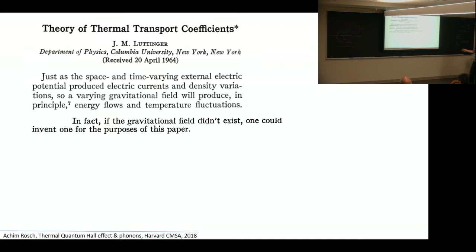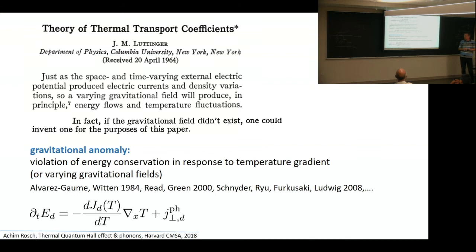So he says, just as space-time varying electric potential produces electric currents, we have now to use gravitational fields, which can produce energy flows and temperature fluctuations. And in the footnote, he says, well, even if gravitational fields didn't exist before, this would have been the time to invent them. And indeed, they have turned out to be very useful. And they're very important for the gravitational anomaly, namely the fact that we can violate energy conservation locally in response to gravitational fields or to temperature gradients. That was then used in this program to classify topological insulators. Now, in our language, the energy conservation is violated by this temperature gradient term. And it just reflects that the equilibrium current is a function of temperature. So that's all to it. And now, in our case, it means that this anomaly term leads to injection of heat into the phonon system.